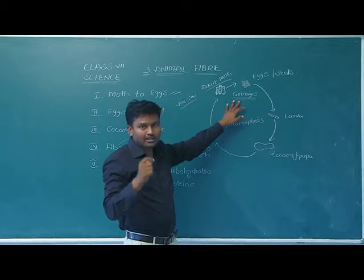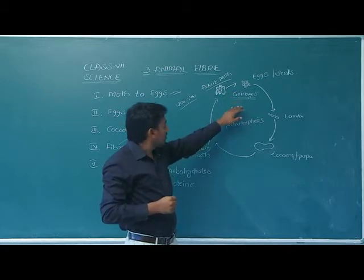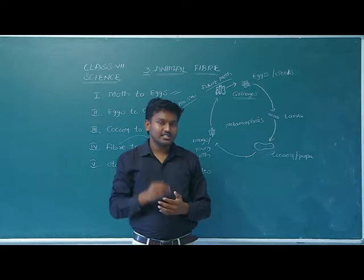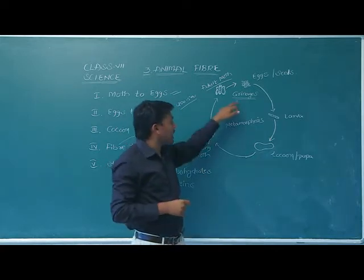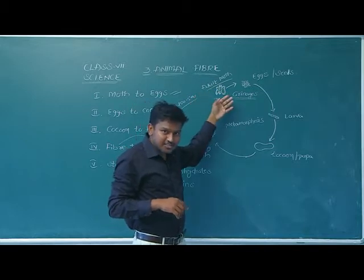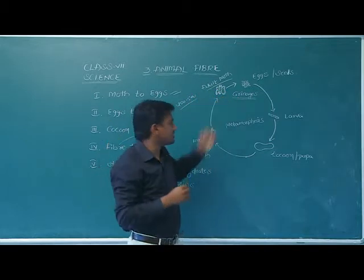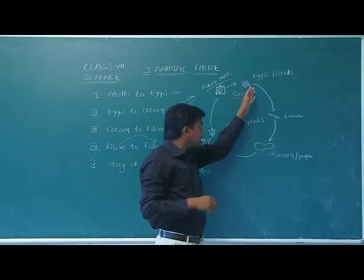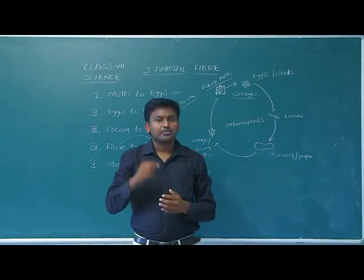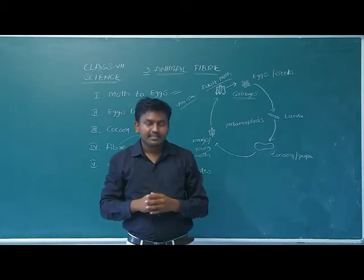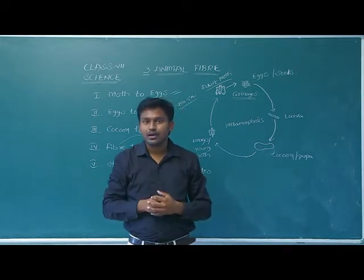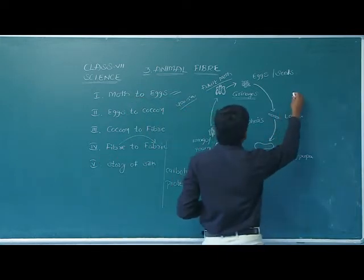These seeds are available in grainages — that means seed growing centers. In Andhra Pradesh, in Chittoor district at Horsley Hills, there is a very big grainage center. Farmers come from different places to buy these seeds. They use machines to hatch the eggs, and after hatching, a caterpillar comes out. At this stage the caterpillars are voracious eaters — they eat very excessively.